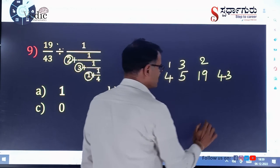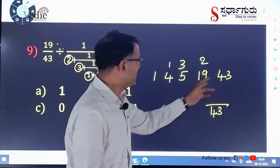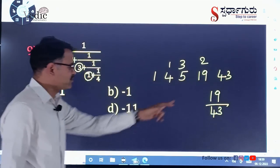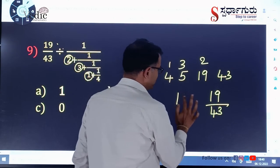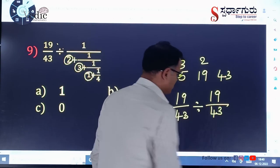Now you can write: 43 becomes the denominator and 19 becomes the numerator. So we have 19 by 43. Then you can go to the question. The question is: 19 divided by 43, divided by...